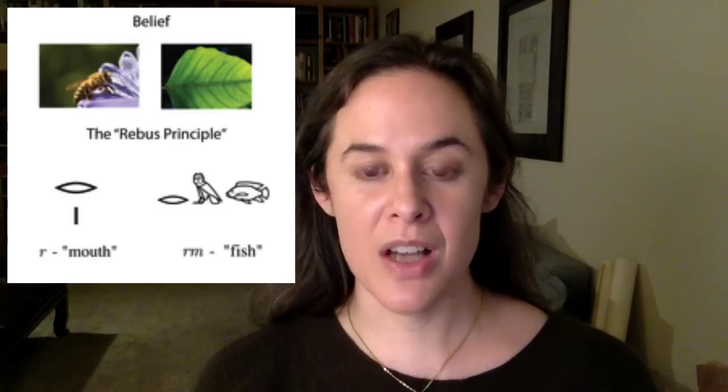As we learn each of the one-consonant signs, I'll put up an image that gives some information about it. First, I'll give the sign itself, and then the transliteration character that represents it. Next, in parentheses, I'll put the name of the sign — what we call it when we talk about it. Below, I'll include a photograph, a picture, or a description of the thing that the sign represents. Finally, at the bottom, I'll give an indication of how we pronounce that sign today.